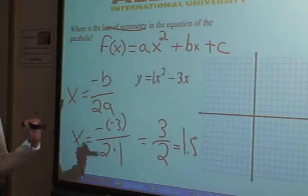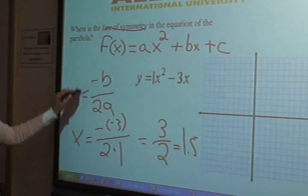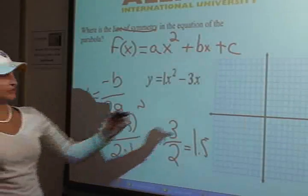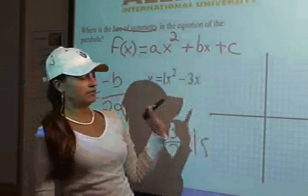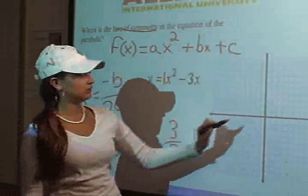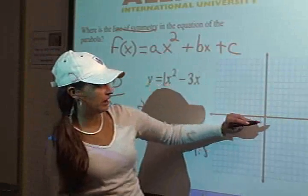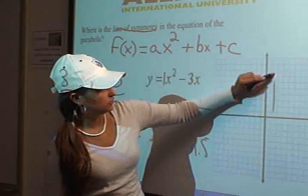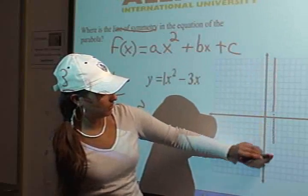So now we're going to draw our line of symmetry since it's for x. Since we're going for x here we know that it's going to be a vertical line. And if it was y it would be a horizontal line. Since it's positive we're just going to go over 1.5 here and draw ourselves a nice little line at 1.5.